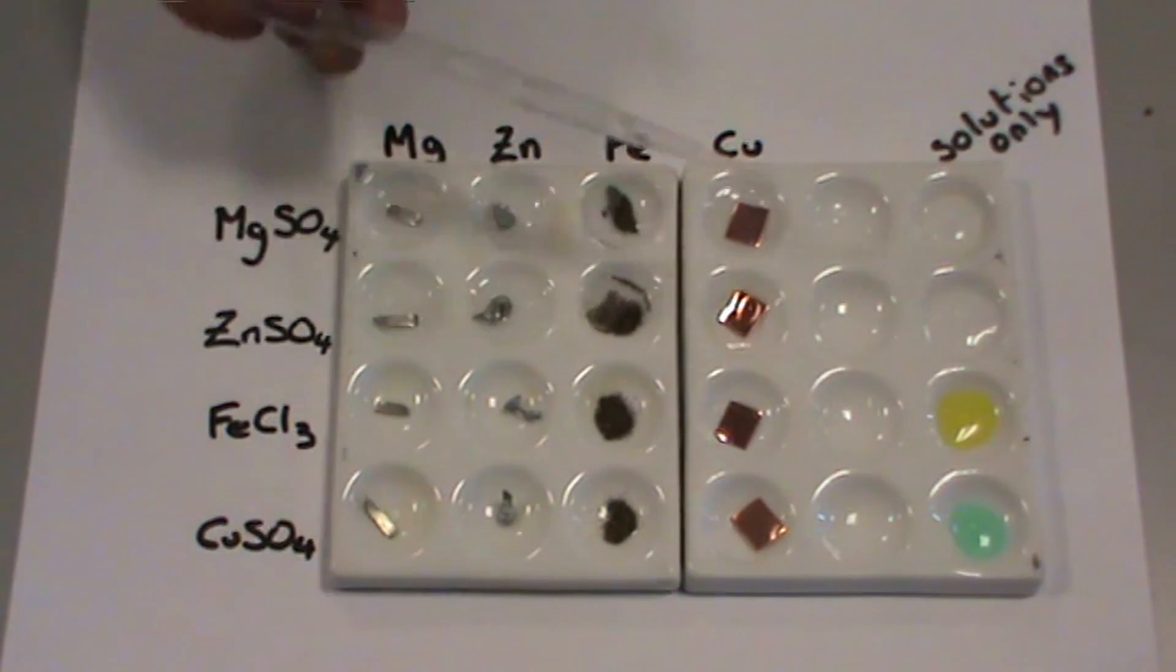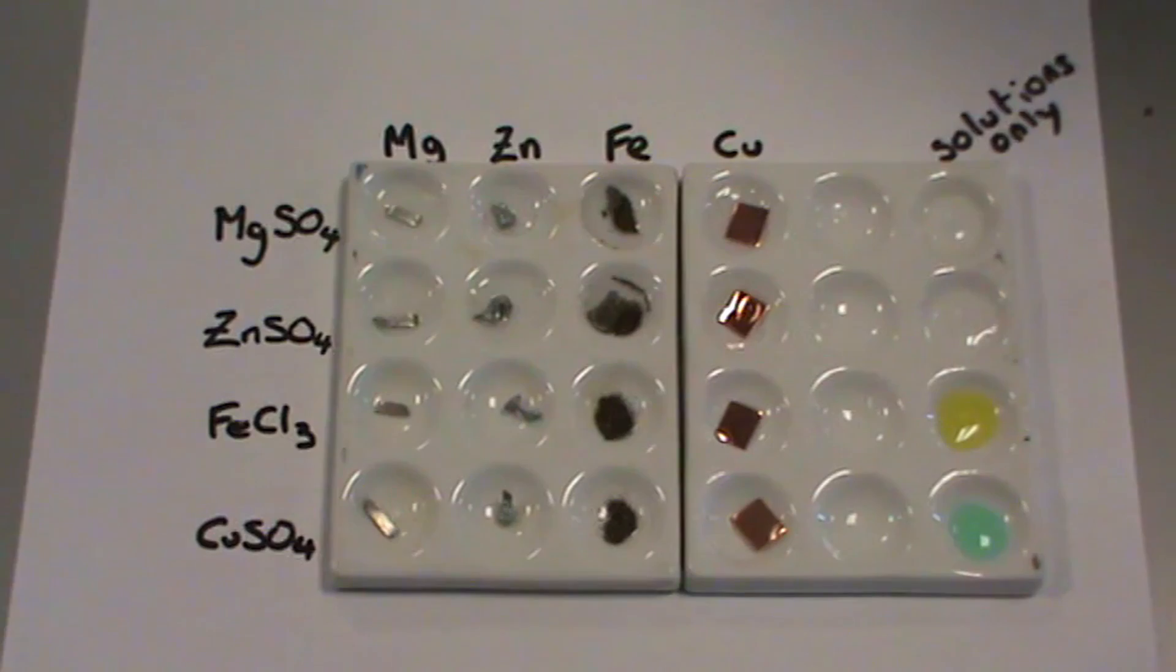The sign of a chemical reaction, in this case, is normally a colour change. That can be a colour change on the piece of metal or a colour change in the solution.